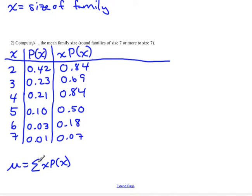If you look at the formula, you'll notice this has a summation symbol, which means we add those all up. We're going to take 0.84 plus 0.69 plus 0.84 plus 0.5 plus 0.18 plus 0.07, and we get 3.12. There are basically units on this, and in this case, people. So that's how you find the mean.